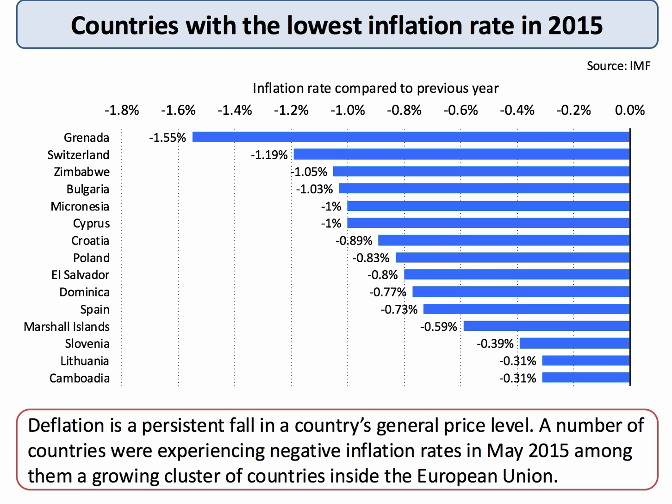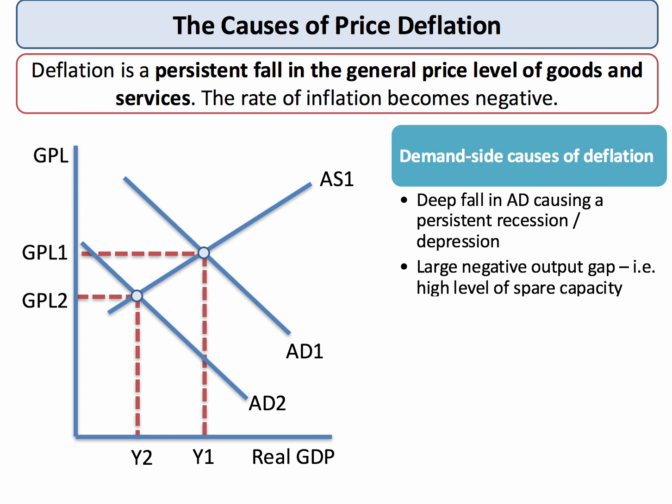So what's causing it? Deflation, as we've said, is a persistent fall in the general level of prices — it's when the rate of inflation becomes negative. Essentially, there are two main causes of deflation: one on the demand side of the economy and one on the supply side. Let's have a quick look at each of them.